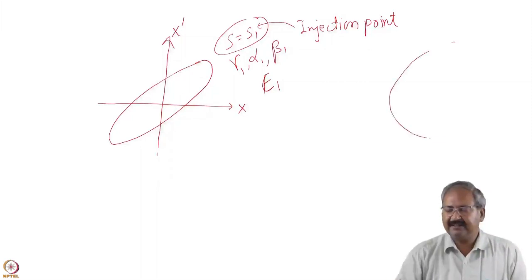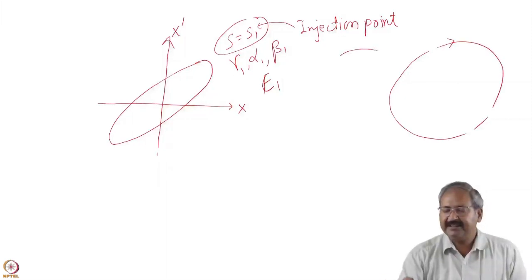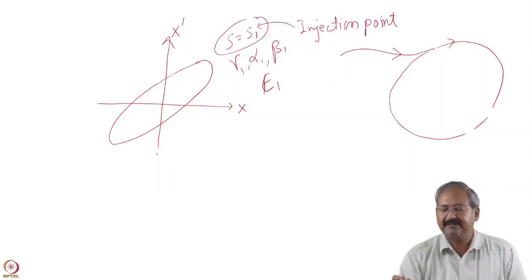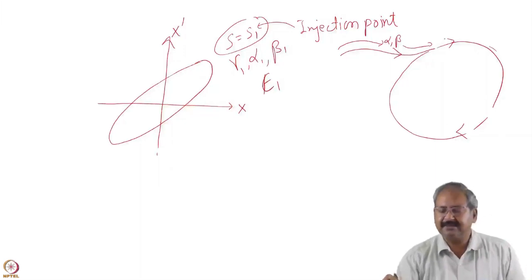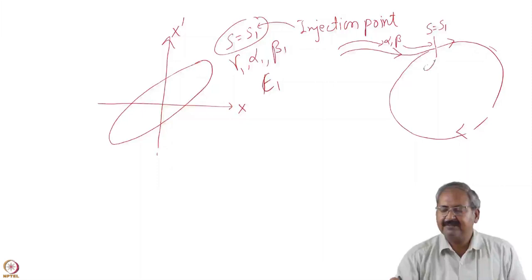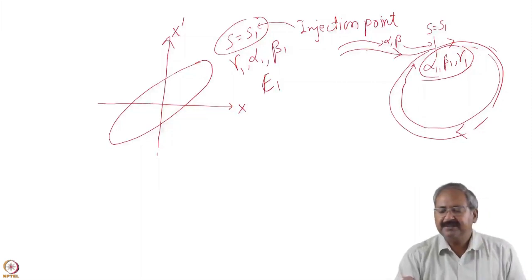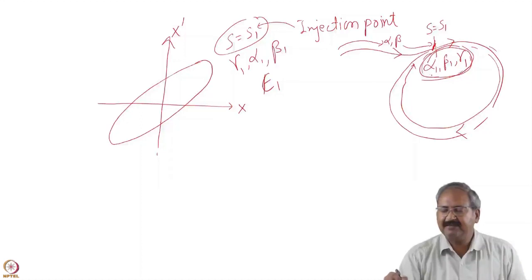Suppose the previous accelerator from which we are getting the beam has a transport line bringing the beam inside this accelerator. This transport line will also have its own alpha and beta depending on the magnetic arrangement. The circular optics of the synchrotron will also have alpha and beta at this location s = s1, with Twiss parameters having values α₁, β₁, γ₁. These Twiss parameters are the periodic solution for the synchrotron optics. If the transport line also has the same alpha, beta, gamma values at its endpoint, then we have a matched condition between both accelerators.